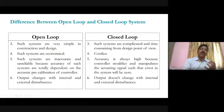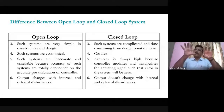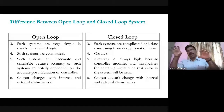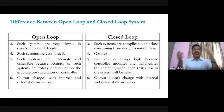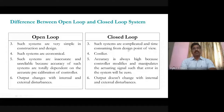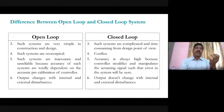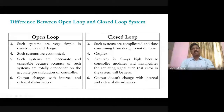Third difference: open-loop systems are very simple in construction and design because there are only two blocks — controller and plant. Closed-loop systems have a comparator, controller, plant, and feedback element, making them more complicated and time-consuming from a design perspective. Fourth difference: since hardware is less in open-loop, it is economical — cost is less. In closed-loop, hardware is increased, so it is more costly than open-loop.